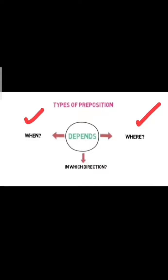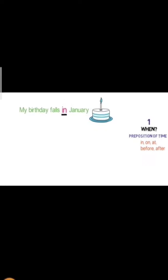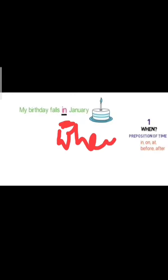In preposition of time, the words that come are: in, on, at, before and after. For example: My birthday falls in January — mera birthday jo hai woh January mein aata hai. So here 'in' is used; in se yeh pata chal raha hai ki birthday kab aata hai — January mein. One more example: My vacation ends on Monday — mere jo vacation hai, meri jo chuttiyaan hain, woh Monday ko khatam hongi. So 'on' is a preposition of time in this sentence.